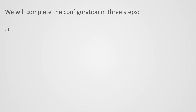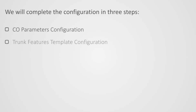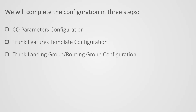Let us start with the configuration. We will complete the configuration in 3 steps: CO parameters configuration, trunk features template configuration, and trunk landing group or routing group configuration.